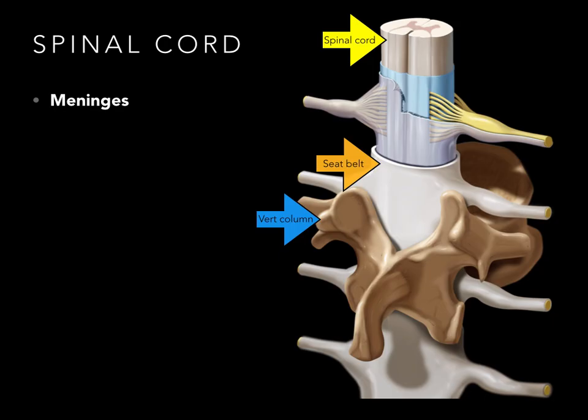The vertebral column — all those vertebrae, cervical, thoracic, lumbar, sacral — their function is to protect the spinal cord when someone kicks you in the back or you fall down. But what then is protecting the spinal cord from the vertebral column? The answer is the meninges.